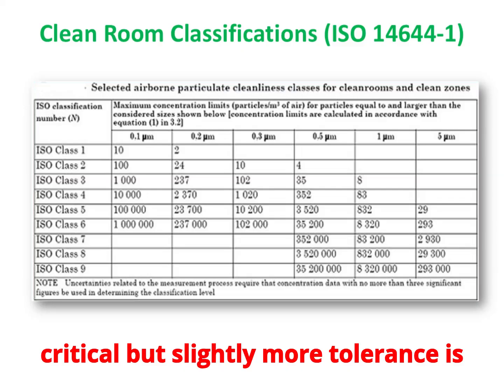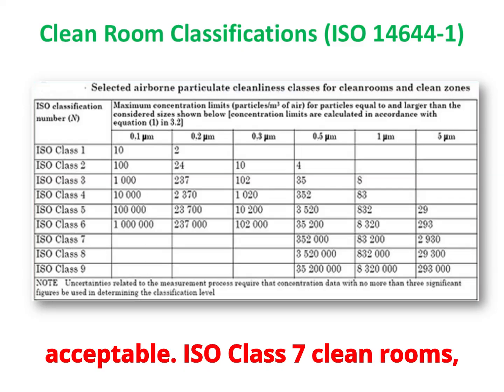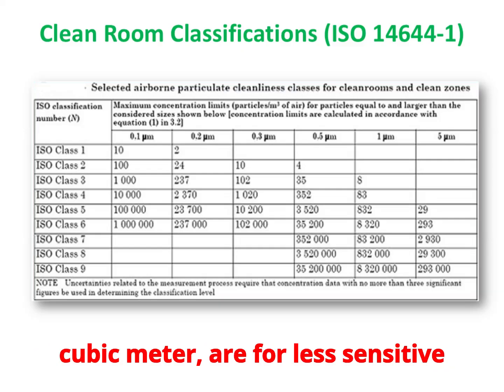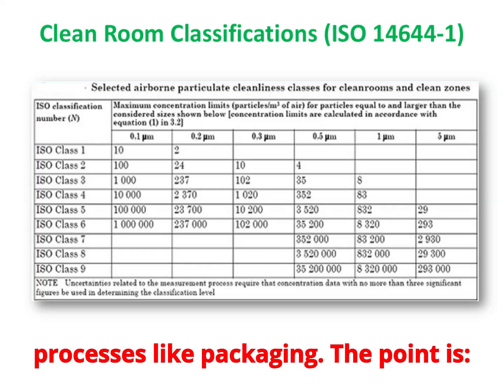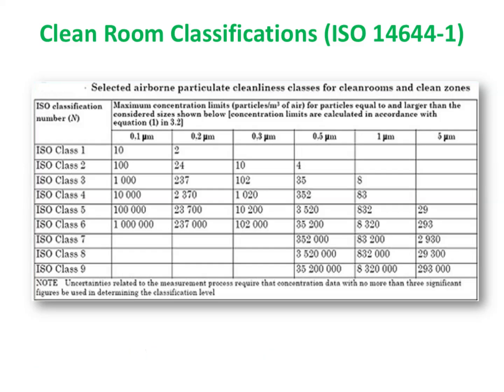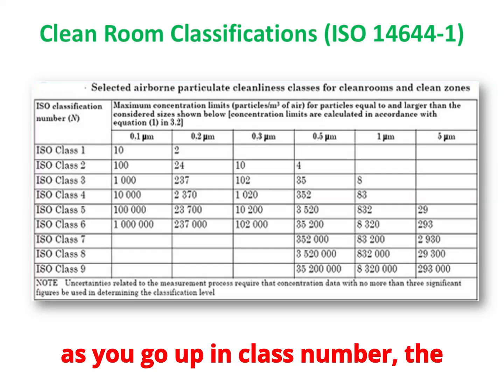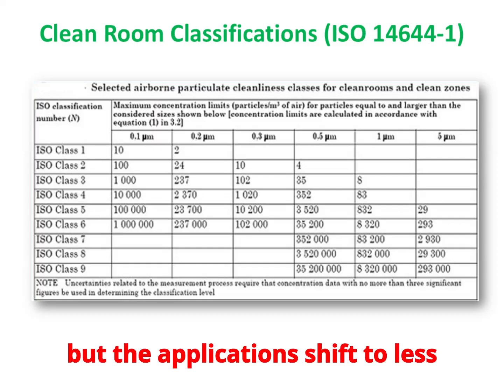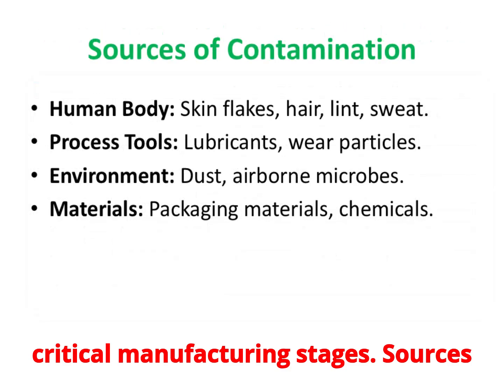ISO Class 7 clean rooms, allowing over 350 million particles per cubic meter, are used for less sensitive processes like packaging. As you go up in class number, the tolerance for contamination increases, but the applications shift to less critical manufacturing stages.